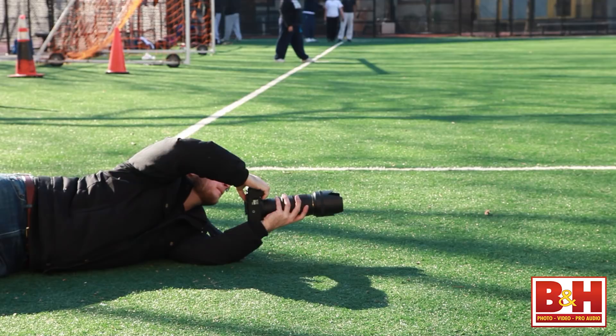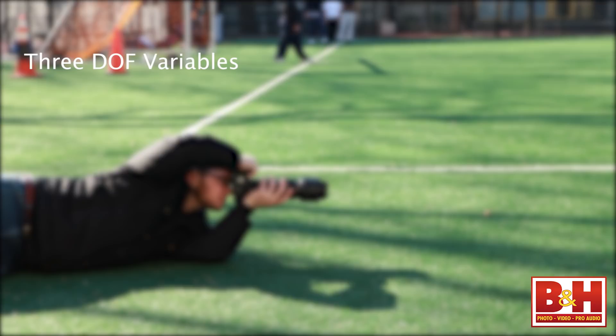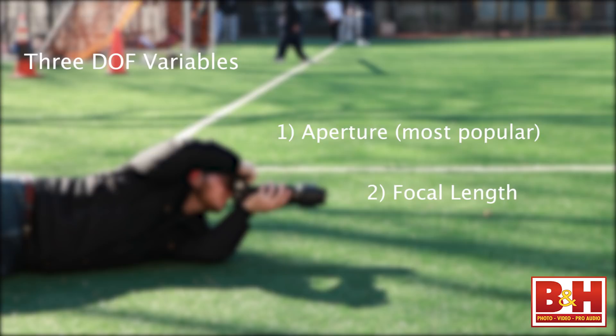So those are the basics, but how do we control depth of field? We have three primary variables to consider: lens aperture, the most popular way to manipulate depth of field; lens focal length; and the distance from camera to subject.